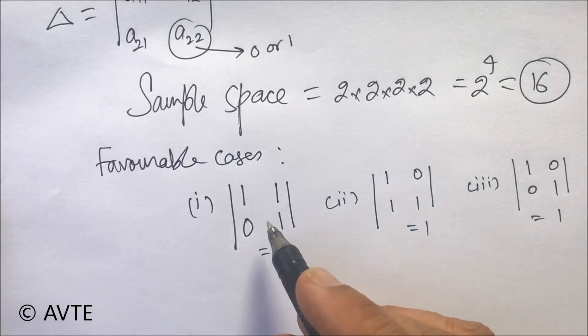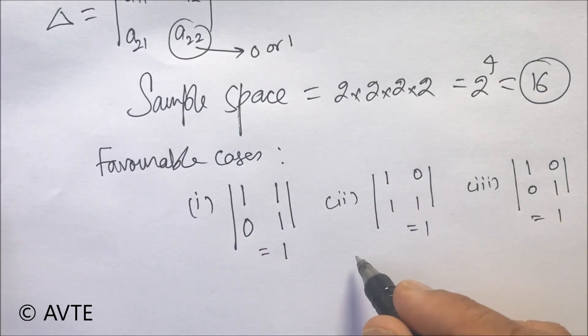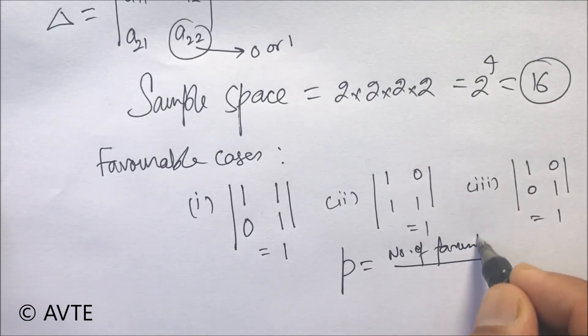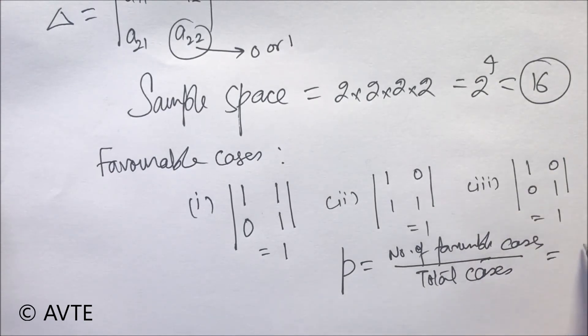So when the number of favorable cases is 3, what is the basic formula? Number of favorable cases divided by total cases. So now you can easily figure out that the probability is 3 by 16.